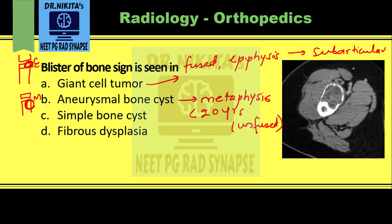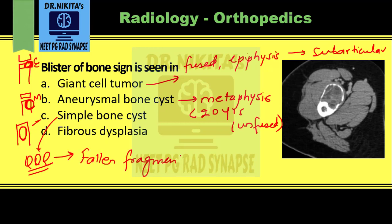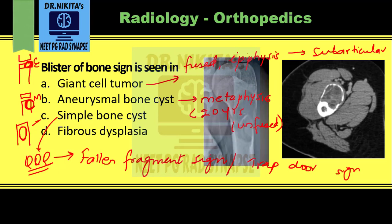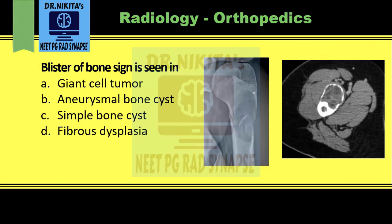Simple bone cyst, as mentioned, is centrally located rather than eccentric. Also remember the important sign in simple bone cyst — very frequently asked and recently appeared in an exam — it has the fallen fragment sign, also called the trap door sign. As seen in this image, there is a centrally located lytic lesion in the bone with a bone fragment falling inside the lesion. That is the fallen fragment sign of simple bone cyst.